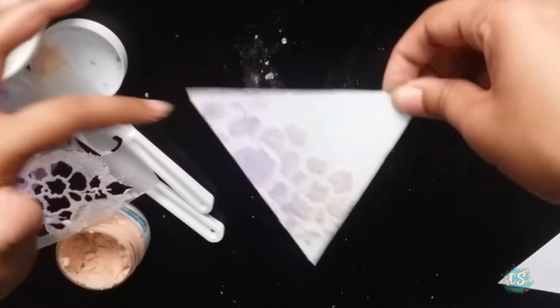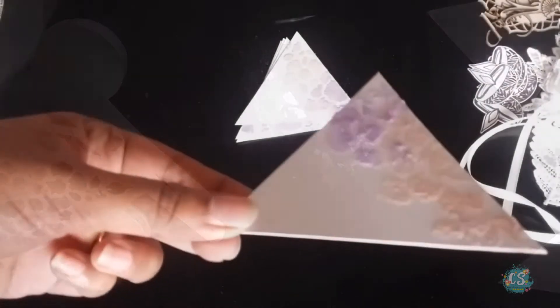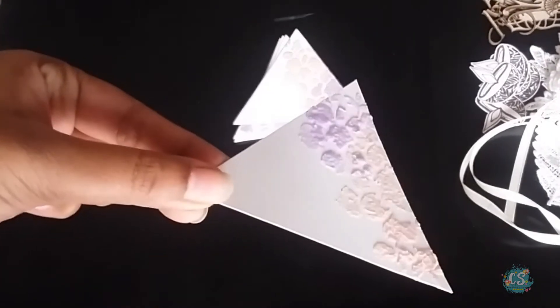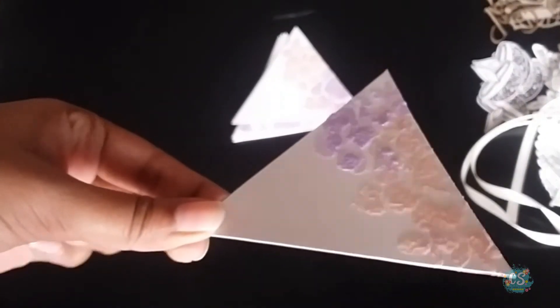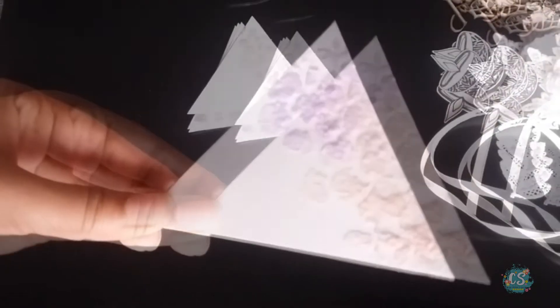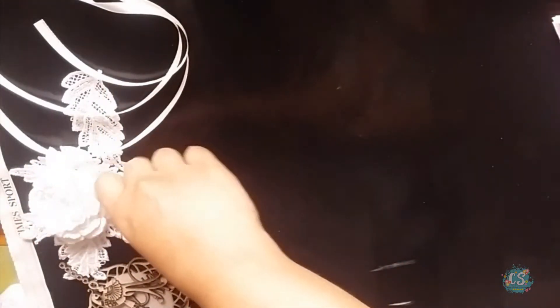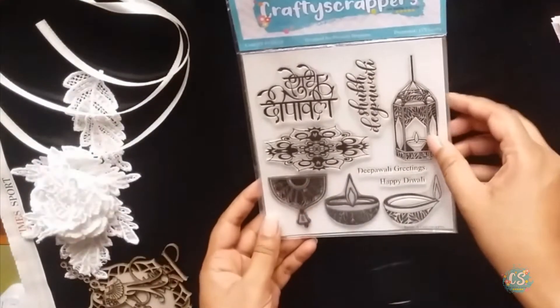Once I finished stenciling on all the five triangles, I just let it air dry. It's completely dry now and you can see how beautiful it looks, how beautiful texture it gives you. The shimmer paste also gives you this beautiful shine. My camera is not able to catch it but visually when I see it, it's very pretty and beautiful. It's time to make a few elements for my bunting.